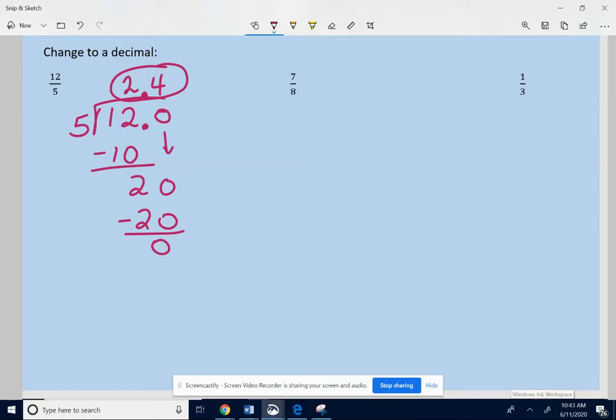7 eighths. Divide the bottom 8 into the top 7. Notice in this problem the top number is smaller. In the first problem the top number was bigger. It doesn't matter. You always take the top divided by the bottom. I would go ahead and put the decimal point after the 7, and even right above it.